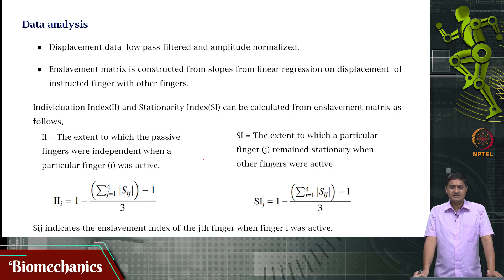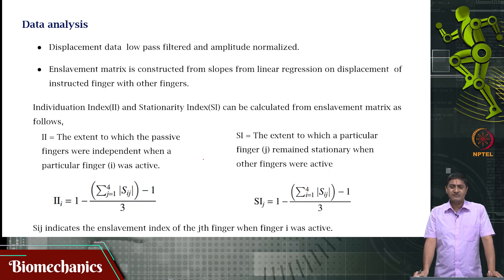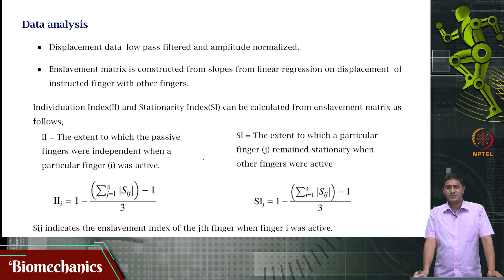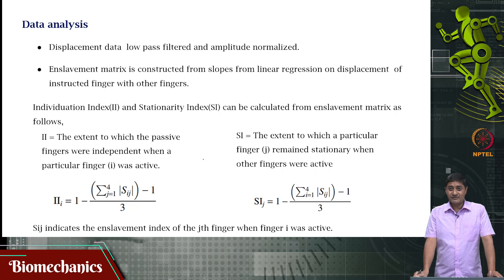We constructed the enslavement matrix using the slopes of linear regression of the displacement of one finger with the displacement of the other non-instructed fingers. We computed the individuation index and stationarity index as previously defined by Ross and Schieber. The individuation index is defined as the extent to which passive fingers are independent when a given finger is instructed, and the stationarity index is defined as the extent to which a given finger remains stationary when other fingers are active. S_ij is taken from the enslavement matrix — the enslavement index of the j-th finger when the i-th finger was active.